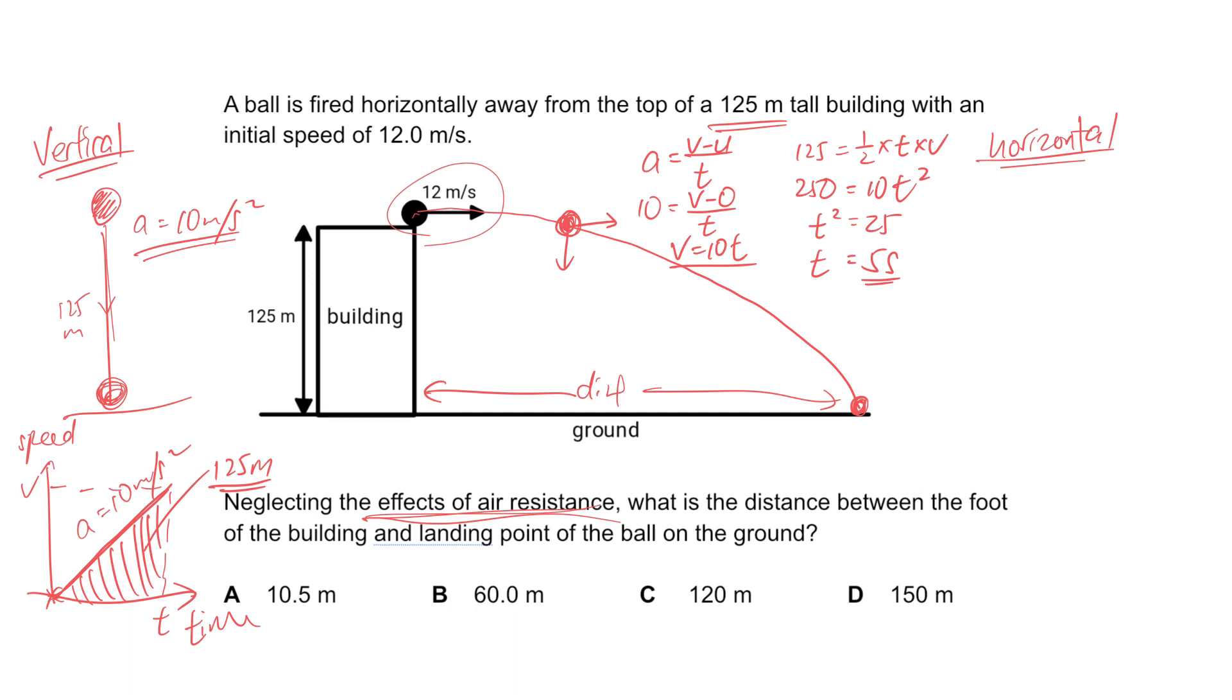It will still take 5 seconds to reach the floor. In other words, if you throw it with a higher speed, the ball will land further away, but it will still take 5 seconds because the acceleration due to gravity is the same. The higher the speed, the further it will go.